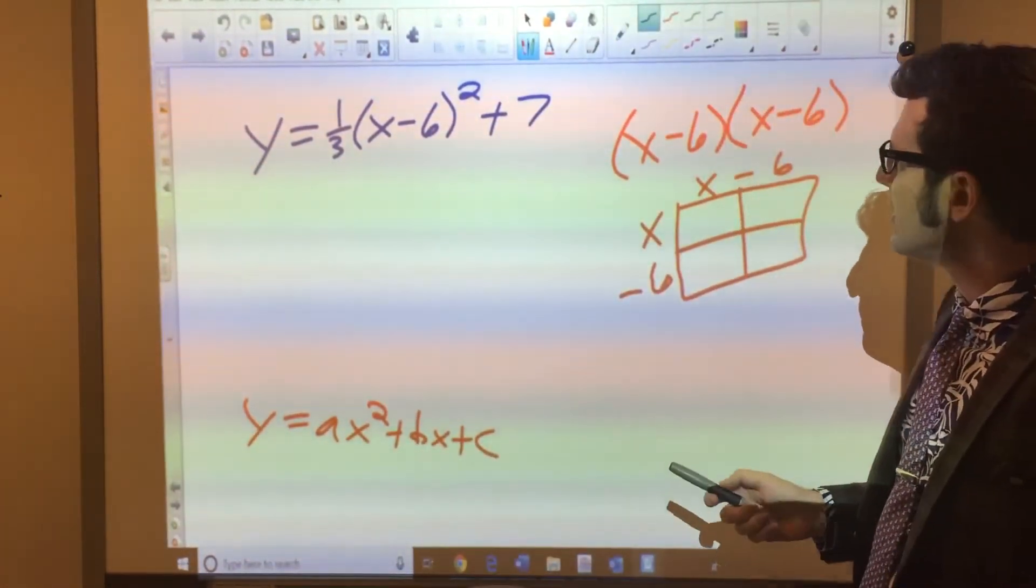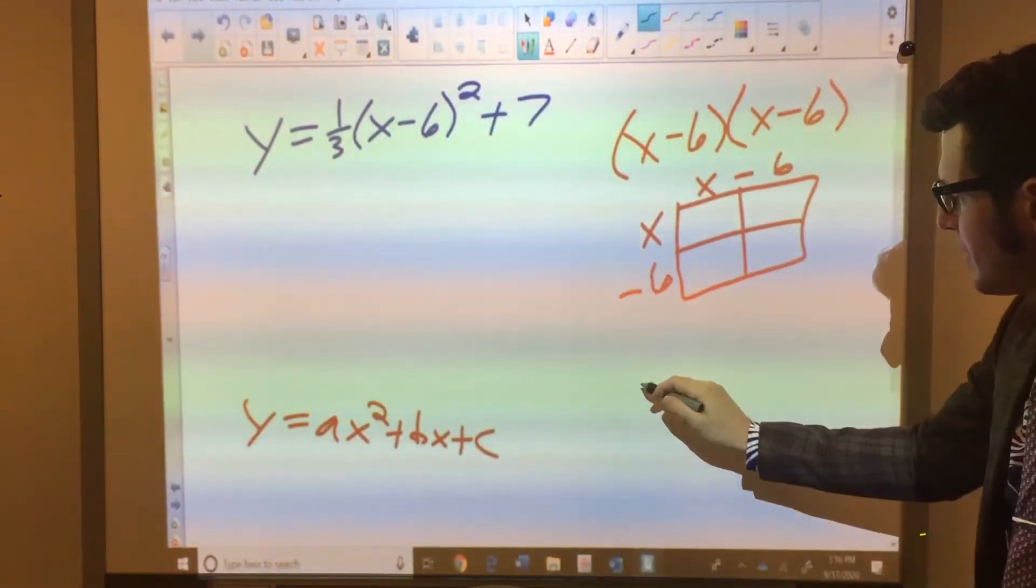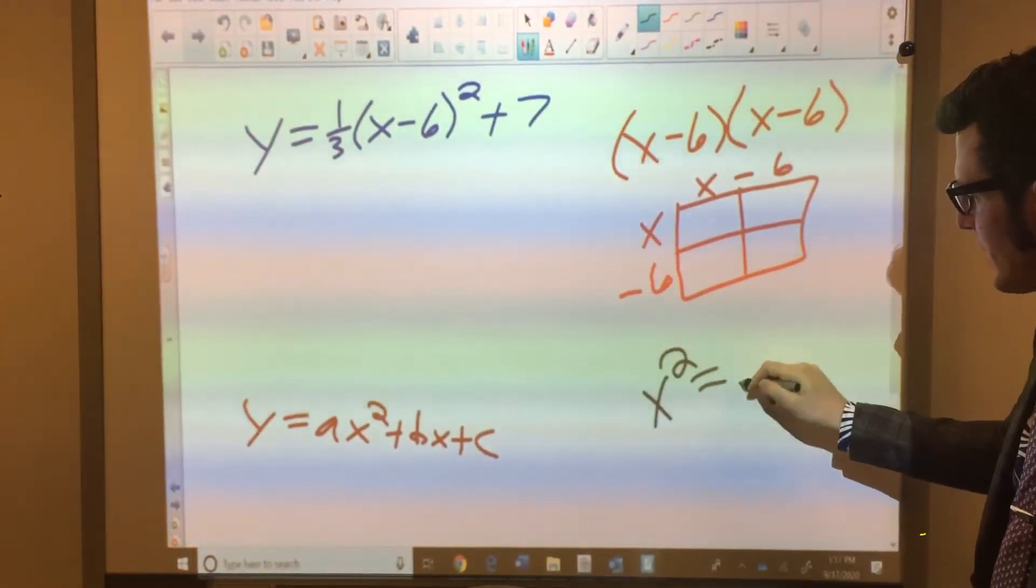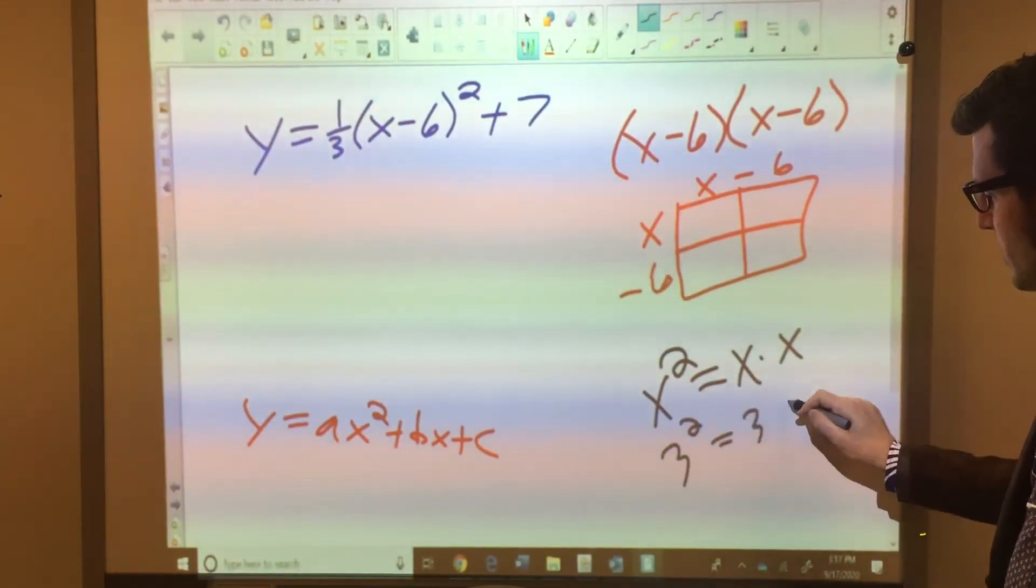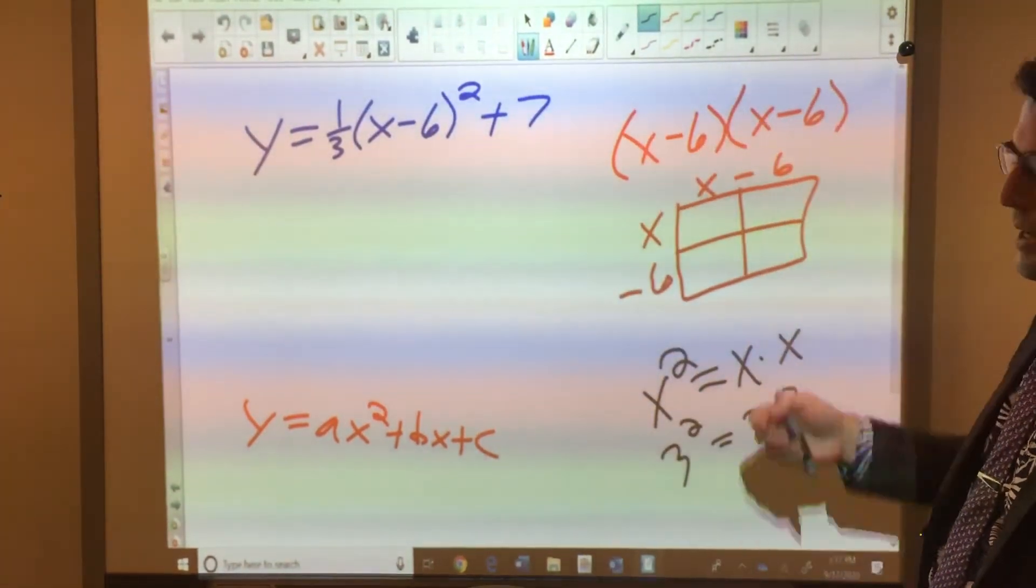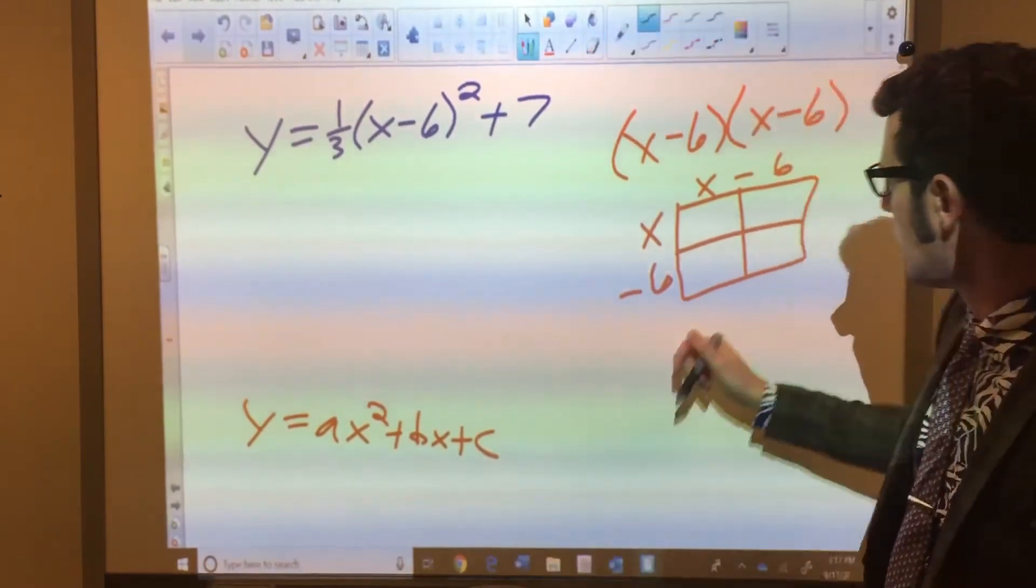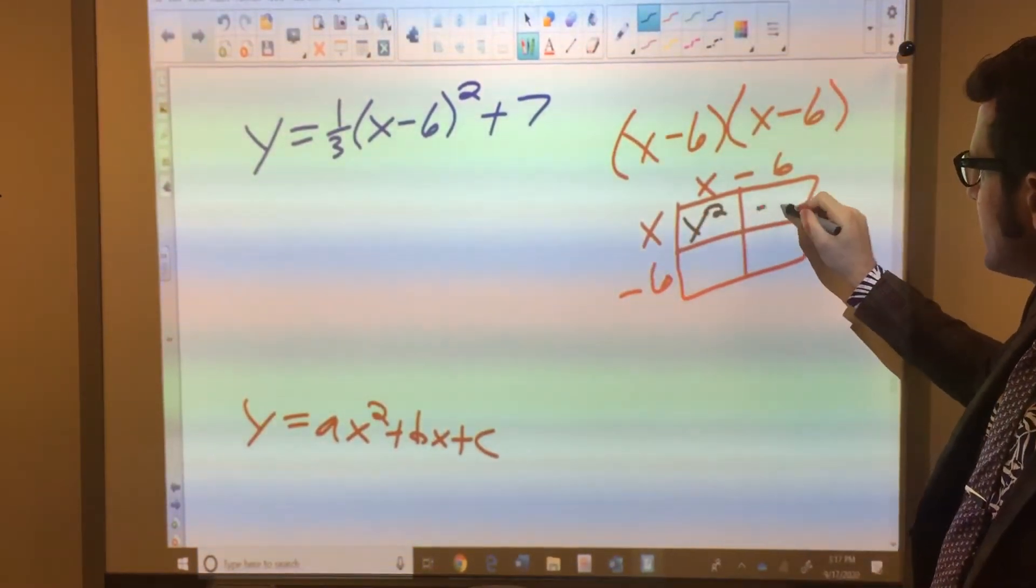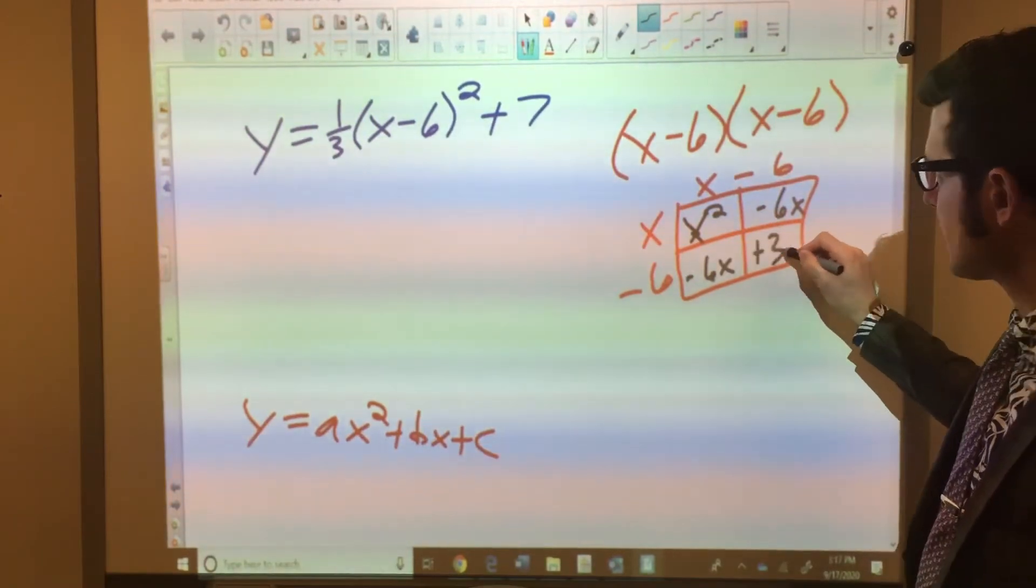If you're questioning why are you taking (x - 6) times itself twice, think about what squared means. x² means I have x times x. 3² means I have 3 times 3. Well, this is (x - 6)², I'm taking (x - 6) times (x - 6). So, multiplying this out, I get x² - 6x, and -6x, and +36.